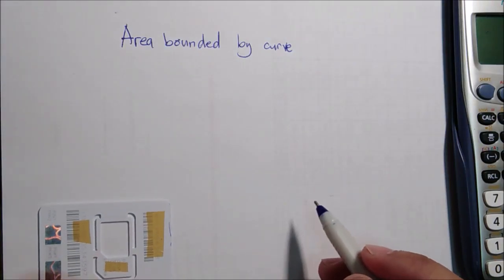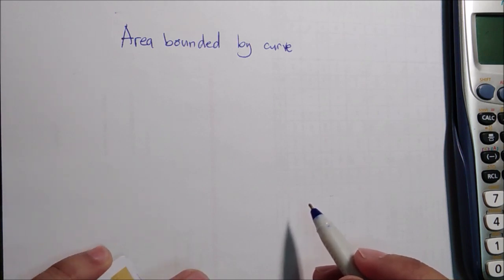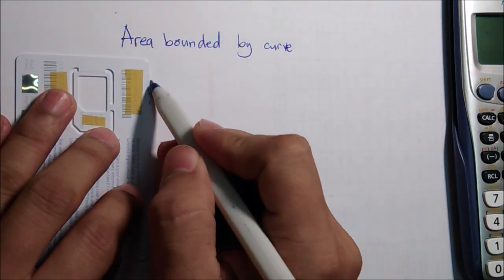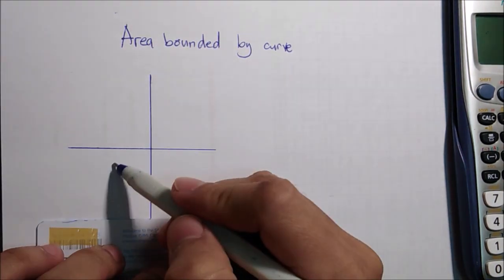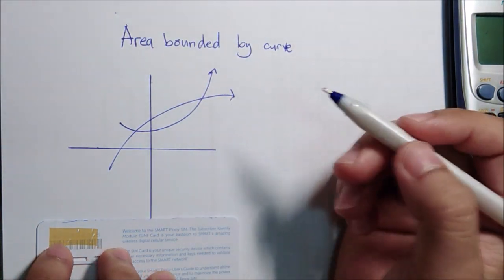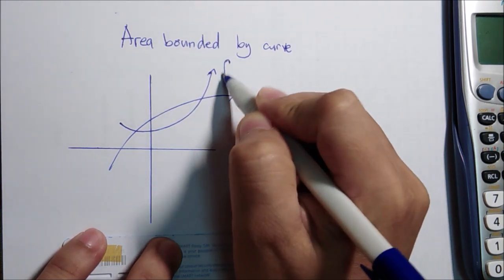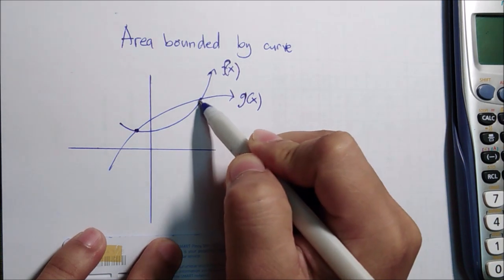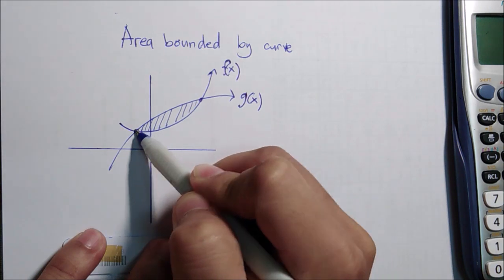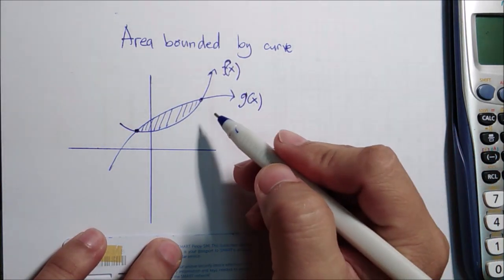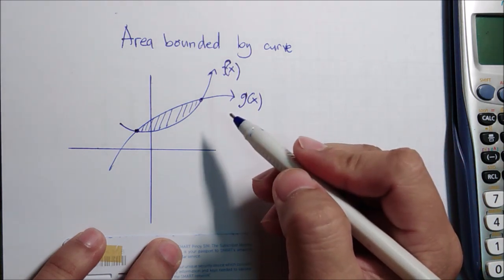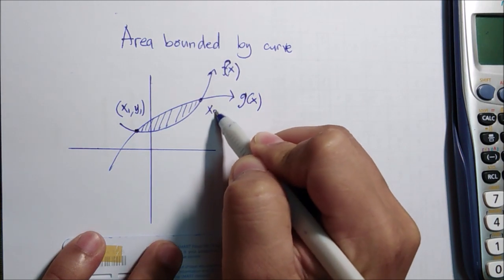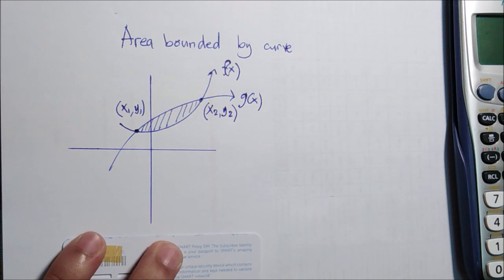Hi everyone, this is Engineer Rafi and welcome to our review channel. Today I will discuss the area bounded by curves. For example, you have two curves — let's say this is g(x) and this is f(x) — and we want to determine the area between these two curves from one point of intersection up to the other. So the first thing to do is to determine the points of intersection: let's say (x1, y1) and (x2, y2).